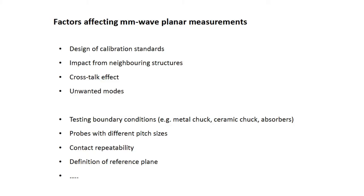On this slide I have listed some factors: design of calibration standards, impact from neighboring structures, cross-talk effects and unwanted mode propagation. There are also other factors like testing boundary conditions — the previous speaker has partially written a paper on this — and probes with different pitch size, because CPW structures can accommodate probes with different pitch sizes. However, results from probes with different pitch sizes at the same frequency range can differ at millimeter-wave frequencies. Contact repeatability and definition of reference plane are also important. Due to time limitations I will only show the impact from four of these factors.